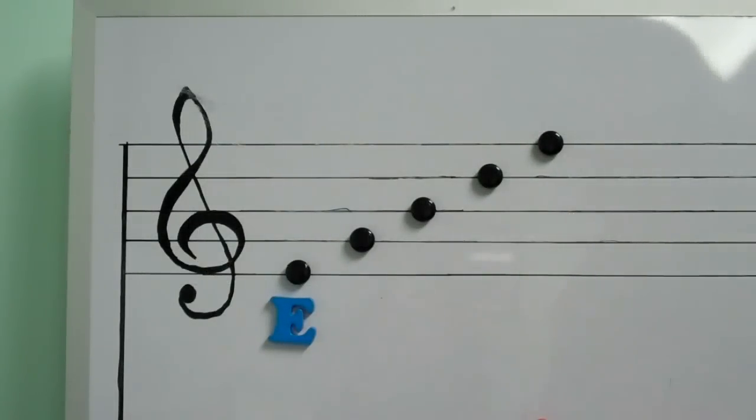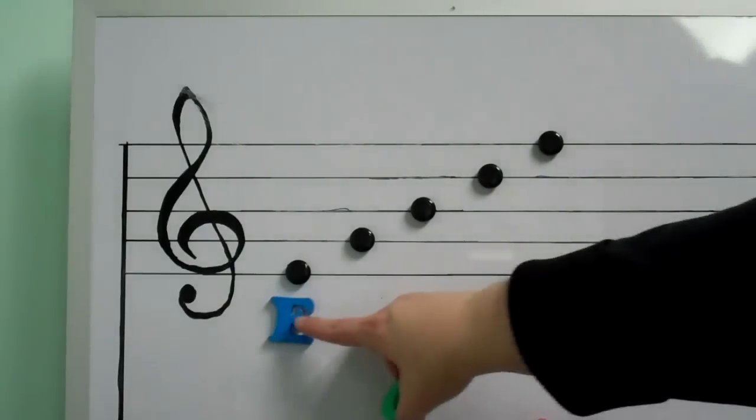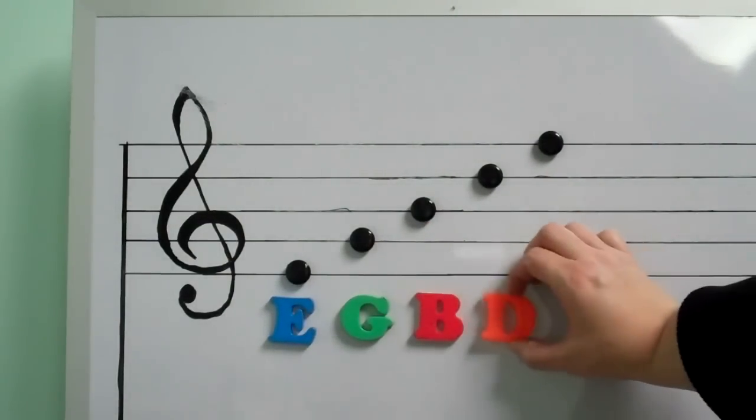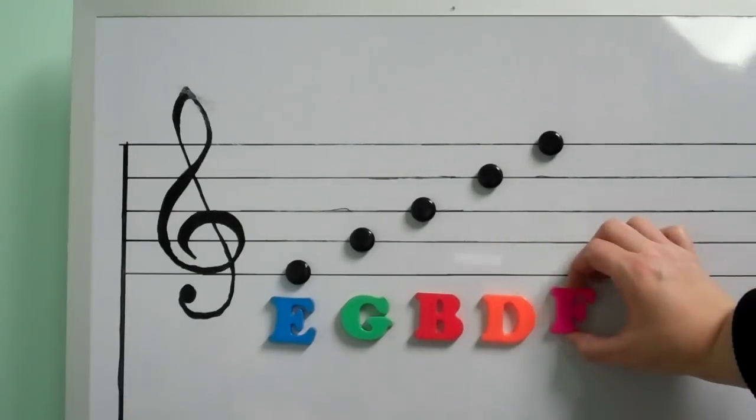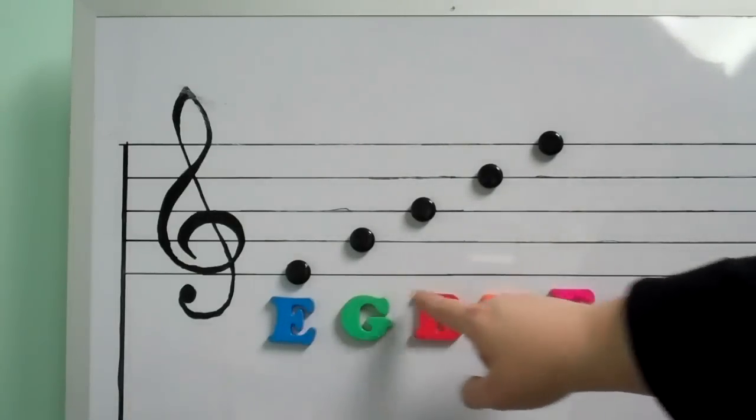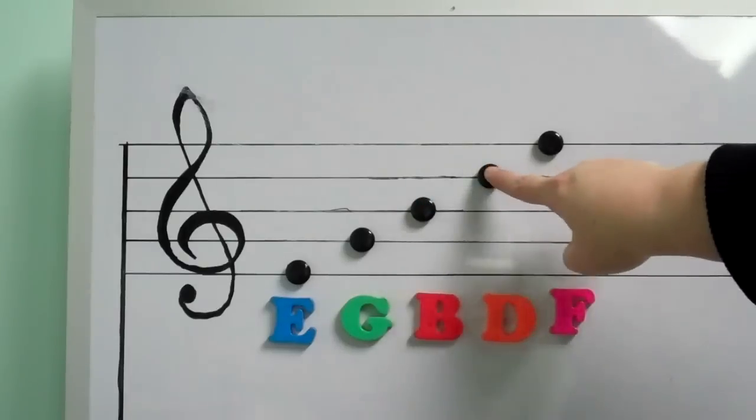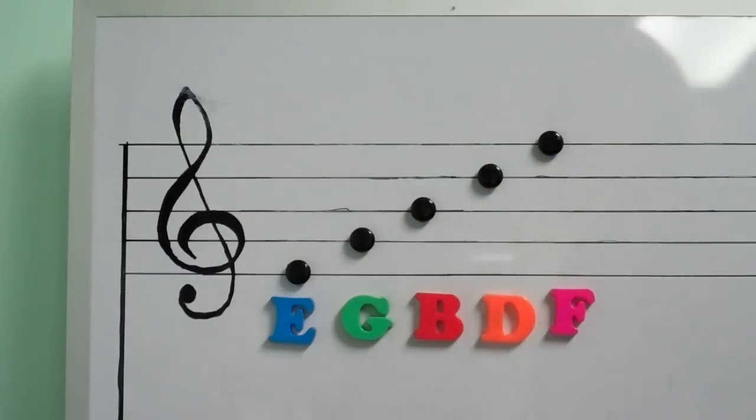You can easily remember the line notes on the staff of the treble clef if you've memorized the phrase Every Good Boy Does Fine. Using the first letter of each of those words will help you to remember the line notes for the treble staff. E for Every, G for Good, B for Boy, D for Does, F for Fine. Every Good Boy Does Fine, or E, G, B, D, F. Those are the lines on the treble staff.